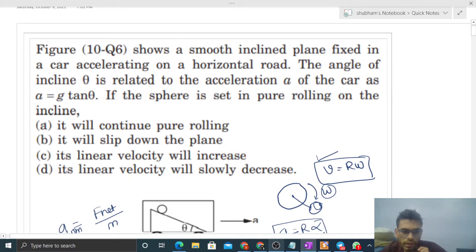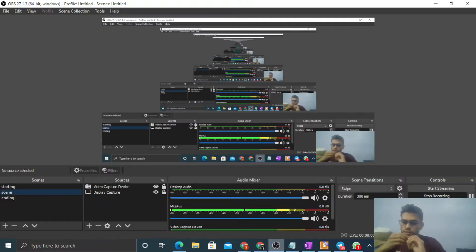Now you can check the options yourself. It will continue pure rolling—of course. It will slip down the plane—no, no slipping. Its linear velocity will increase—no, velocity is constant because acceleration is zero. Its linear velocity will slowly decrease—wrong. So I think you have understood. Let me know if you still have any confusion. We can discuss further. Okay, let's keep working. God bless. Best of luck. Bye.